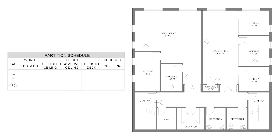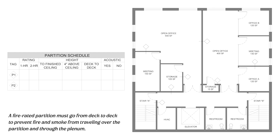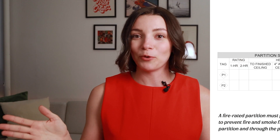For the purposes of this example, I want to quickly note that a fire rated partition always goes to the deck. If a partition only stops at the finished ceiling, there is that plenum space above — between the ceiling and the deck — that fire and smoke can travel through, and that wouldn't be a fire rated partition. So as a note, all fire rated partitions must go all the way to the deck.